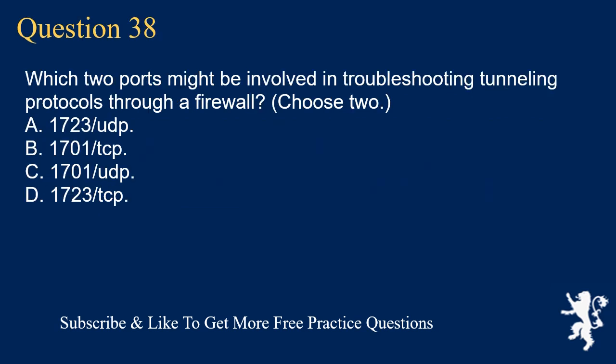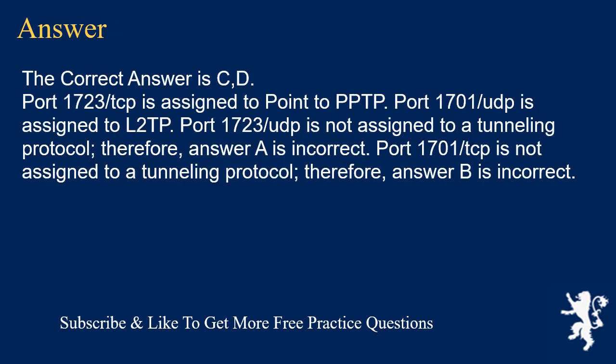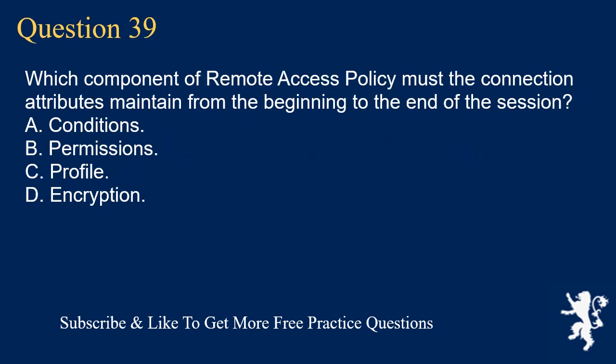Question 38. Which two ports might be involved in troubleshooting tunneling protocols through a firewall? Choose 2. A. 1723-UDP. B. 1701-TCP. C. 1701-UDP. D. 1723-TCP. The correct answers are C and D. Port 1723-TCP is assigned to PPTP. Port 1701-UDP is assigned to L2TP. Port 1723-UDP is not assigned to a tunneling protocol. Therefore, answer A is incorrect. Port 1701-TCP is not assigned to a tunneling protocol. Therefore, answer B is incorrect.